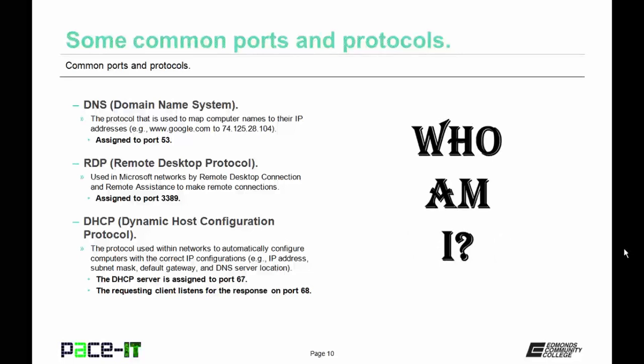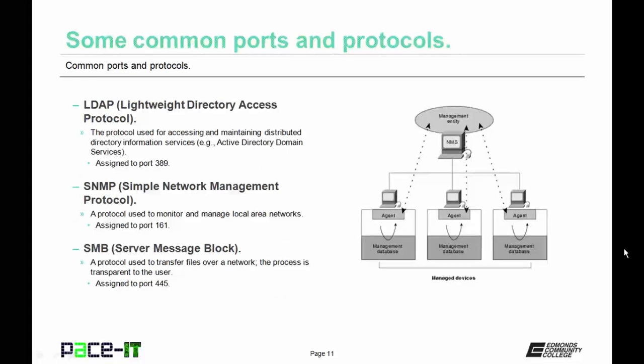Next up is DHCP, Dynamic Host Configuration Protocol. This protocol is used within networks to automatically configure computers with the correct IP configuration — their correct IP address, subnet mask, default gateway, and DNS server location. It uses two ports: the DHCP server is assigned to port 67, and the requesting client listens for the DHCP server's response on port 68. Then we have LDAP, Lightweight Directory Access Protocol, used for accessing and maintaining distributed directory information services such as Active Directory Domain Services. It's assigned to port 389.